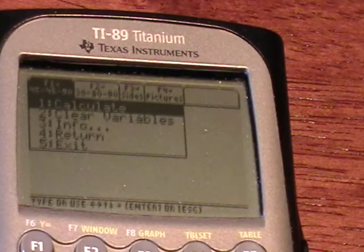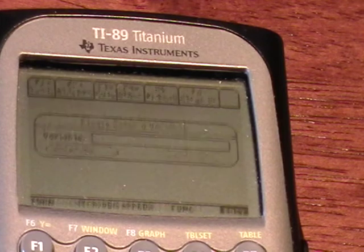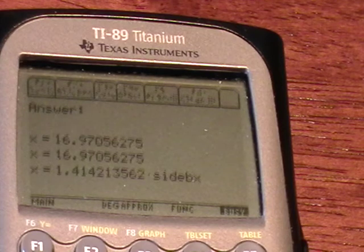And then select the 45-45-90 degree triangle menu, calculate, use X for our variable, and we get an answer of 16.97.